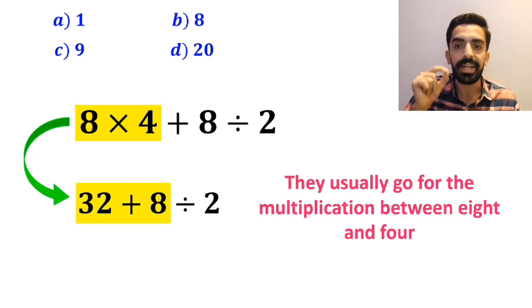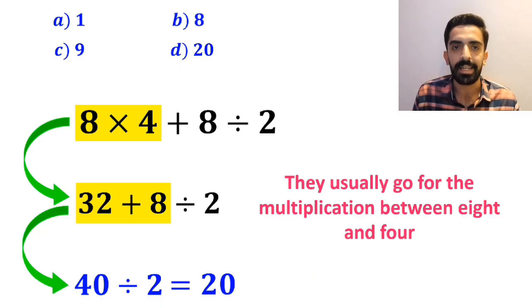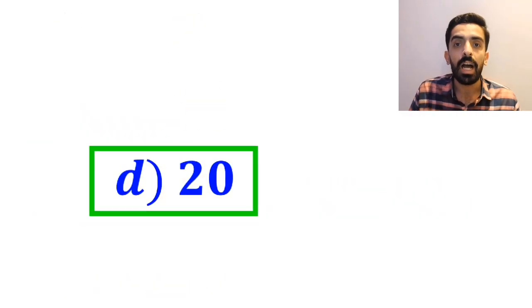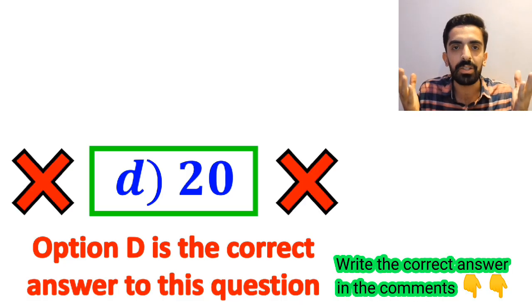Then they add 32 and 8 and rewrite this expression as 40 divided by 2, which finally gives them the answer 20. And without any hesitation they quickly say that option D is the correct answer to this question. But it's not the correct answer to this question.